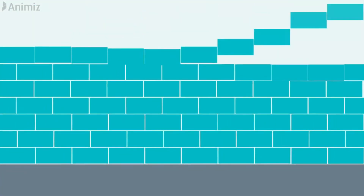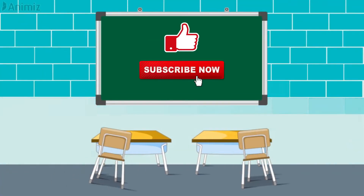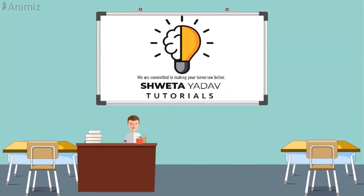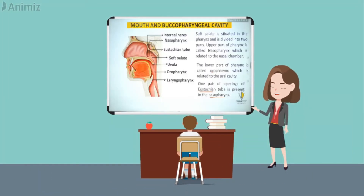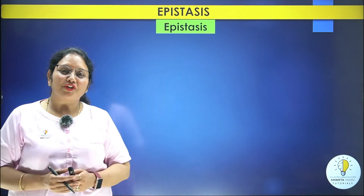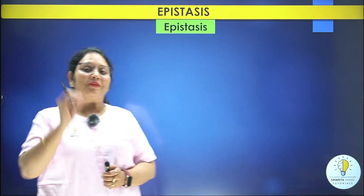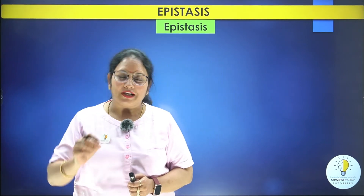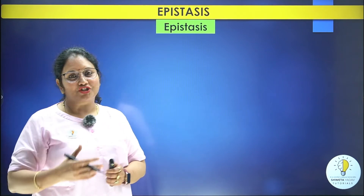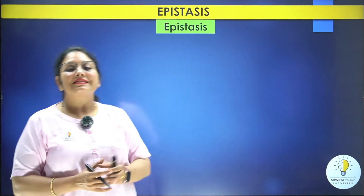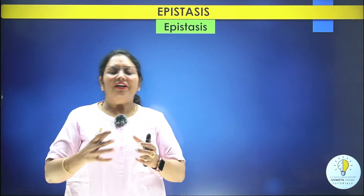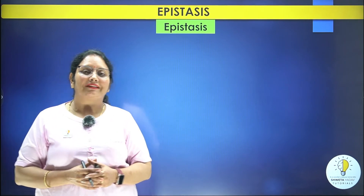Hello students, welcome to Shweta Yadav Tutorials. Please like and subscribe to my channel and hit the bell icon for more updates. In the last video we discussed complementary genes, which are a kind of non-allelic gene interaction. In the same manner, the second kind of non-allelic gene interaction is epistasis — a very important chapter of Class 12: Principles of Inheritance and Variation.